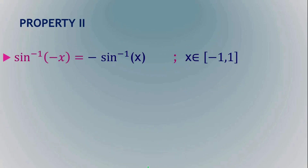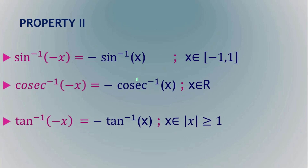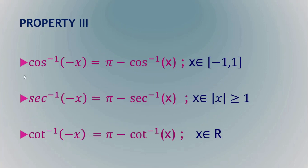The next property: sin⁻¹(−x) = −sin⁻¹(x). The same holds for cosec⁻¹ and tan⁻¹ — that is, tan⁻¹(−x) = −tan⁻¹(x). However, it is different for cos, sec, and cot: cos⁻¹(−x) = π − cos⁻¹(x), and similarly sec⁻¹(−x) = π − sec⁻¹(x) and cot⁻¹(−x) = π − cot⁻¹(x).